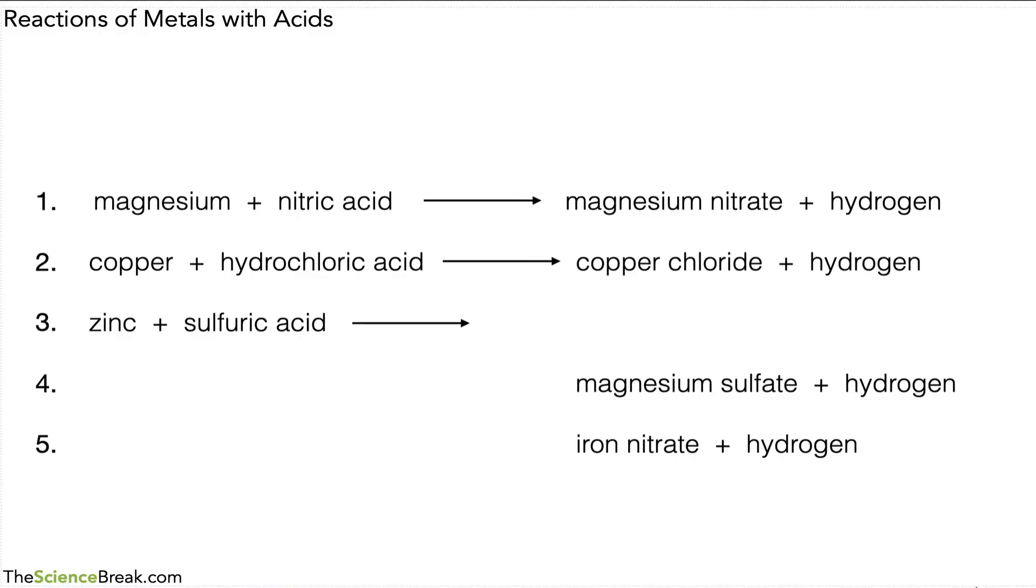So we have copper chloride plus hydrogen. For number two, we have zinc sulfate plus hydrogen. For number three, for number four, the two reactants were magnesium and sulfuric acid. And for number five, the two reactants were iron and nitric acid.